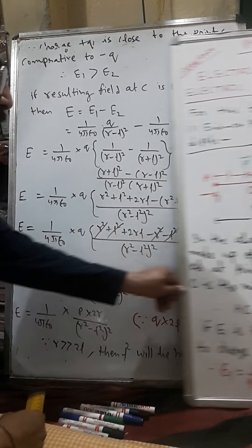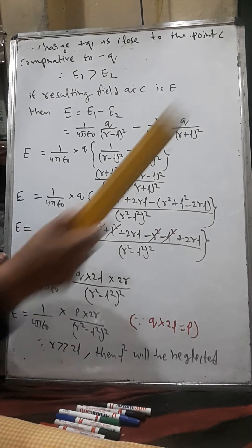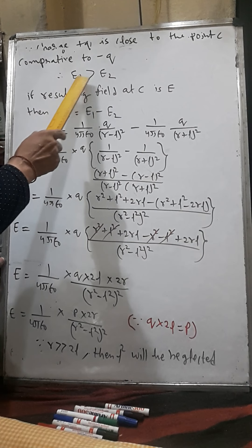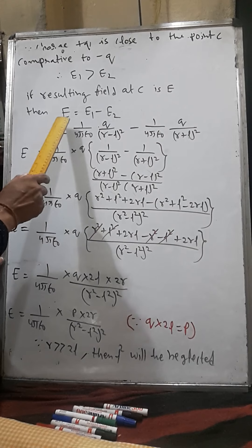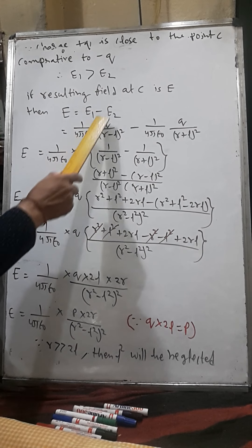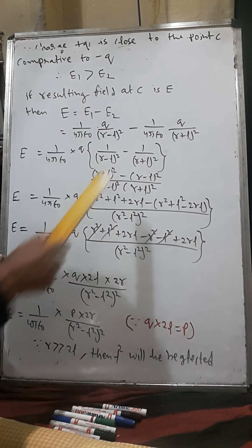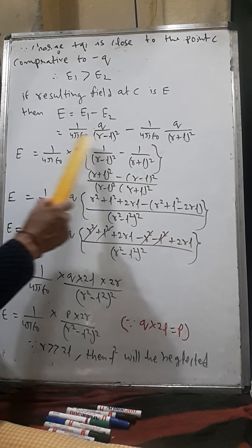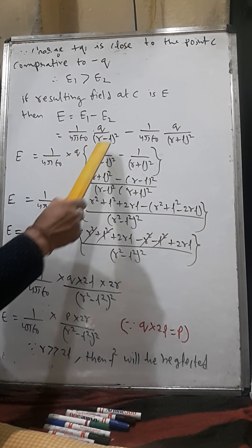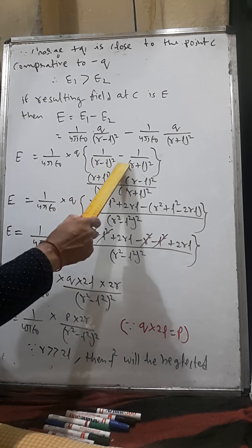Since E1 is greater than E2, the resulting field at point C should be E, which equals E1 minus E2. I substituted the value of E1 and E2 that I calculated. Taking common, 1 upon 4π epsilon naught times q, I got 1 upon (r minus L) whole square minus 1 upon (r plus L) whole square.